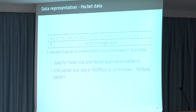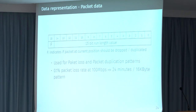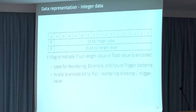For packet data, we have a run-length value to control when packet loss is applied. Due to how patterns are loaded into the kernel with TC, there is currently a 16 kilobyte limit on patterns, which restricts the number of packet loss entries. As an example, at a 0.1% packet loss rate at 100 megabytes per second, we can run for 24 minutes before exhausting the pattern. We can also represent integers for reordering, bit errors, and trigger patterns in a similar way to the float representation.